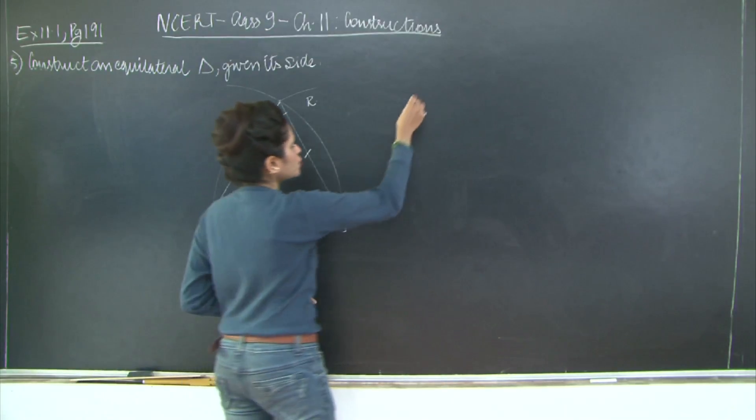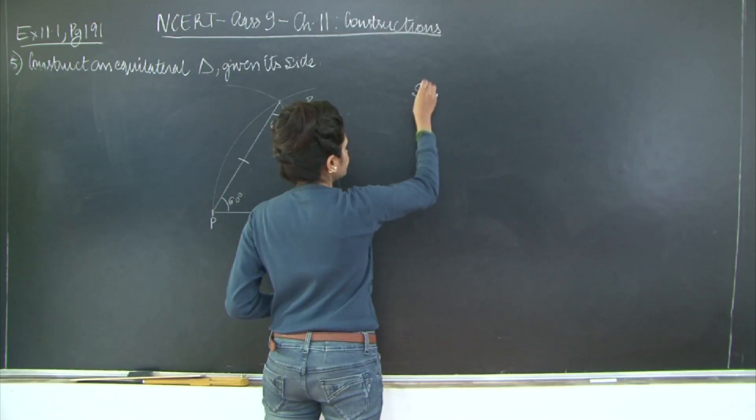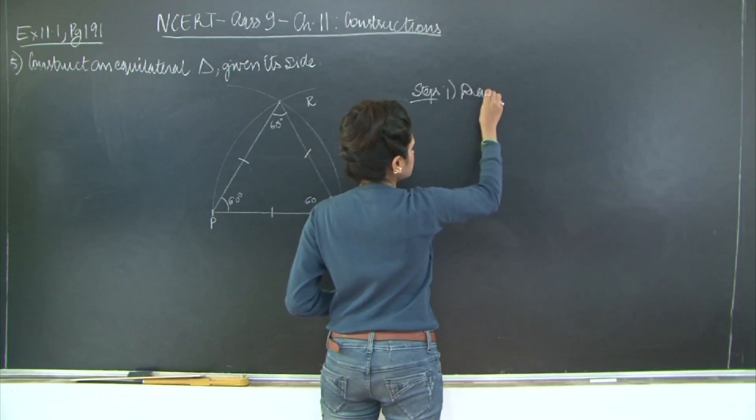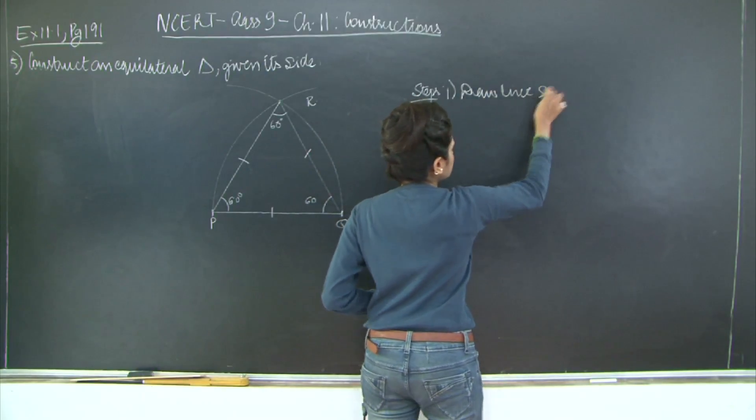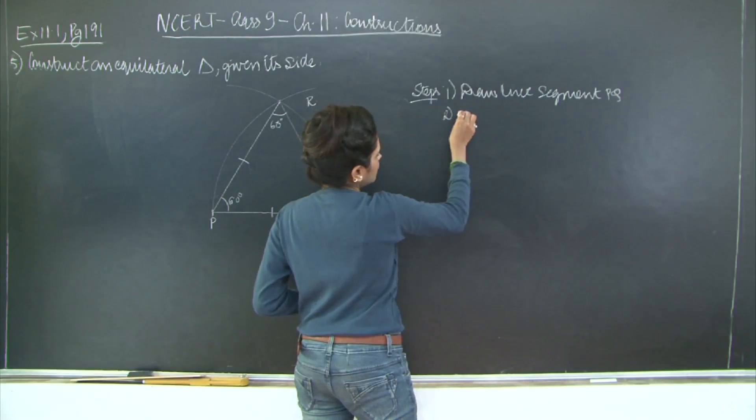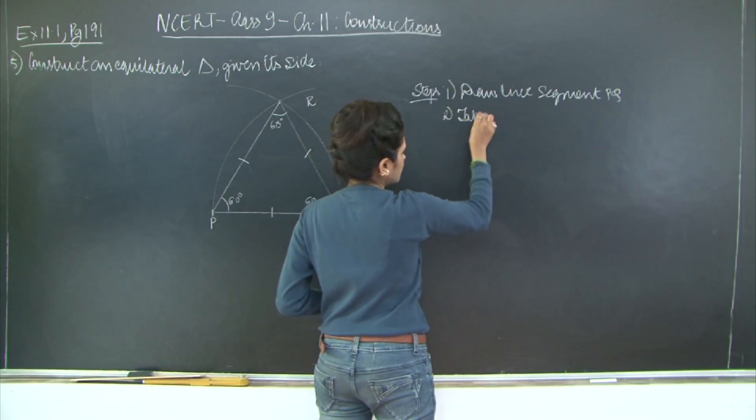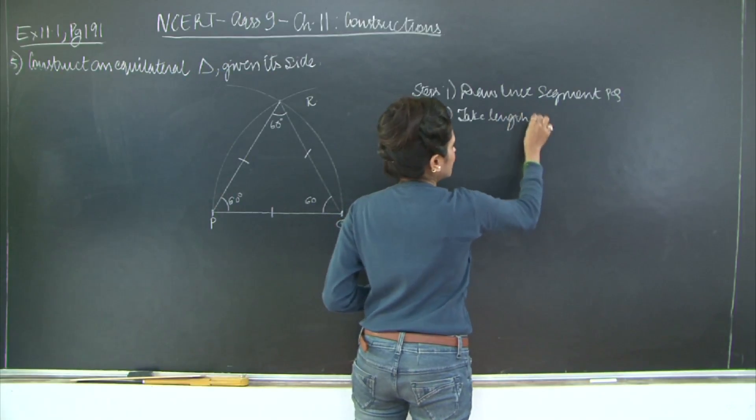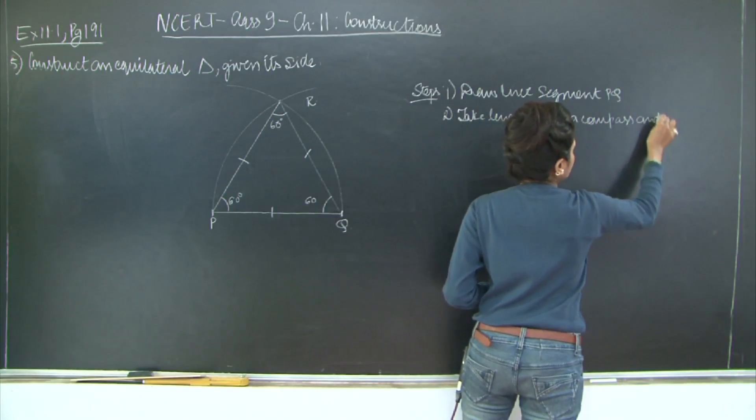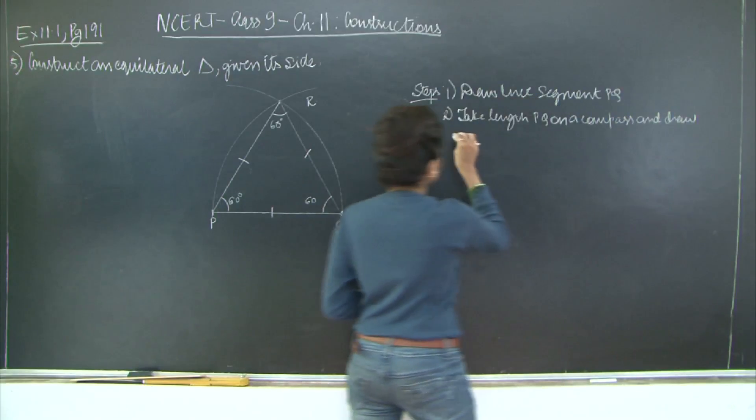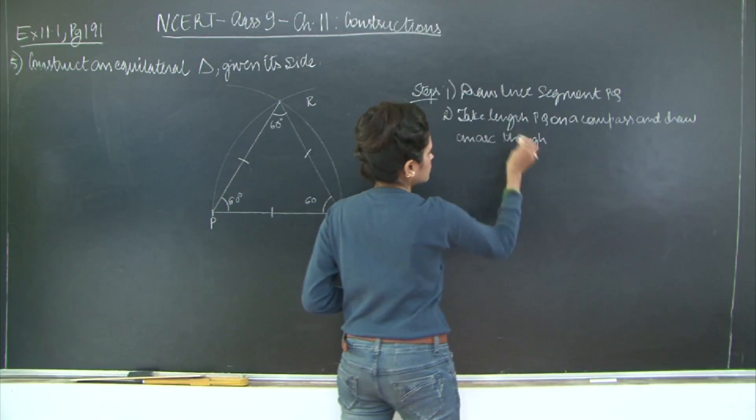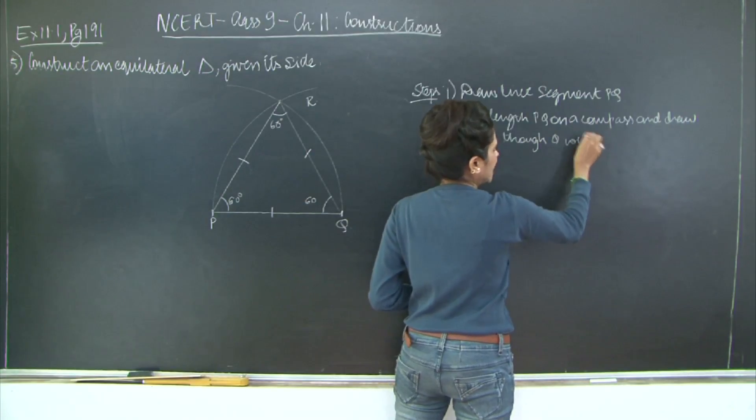So your construction and proof is as follows. Steps: First, draw line segment PQ. Second, take length PQ on compass and draw an arc through Q with P as center.